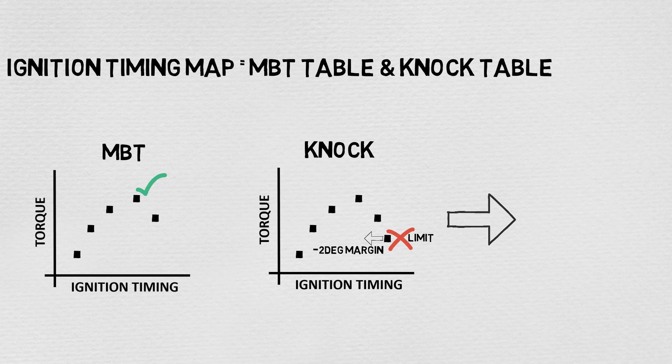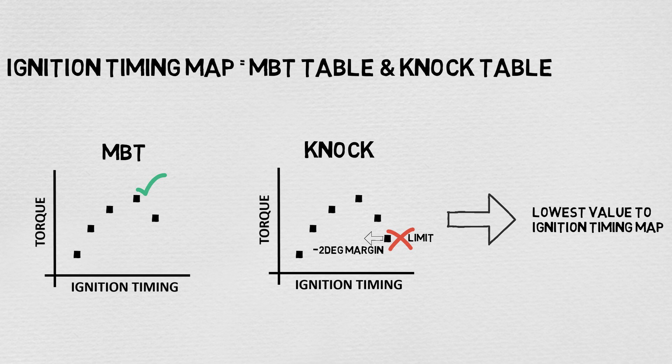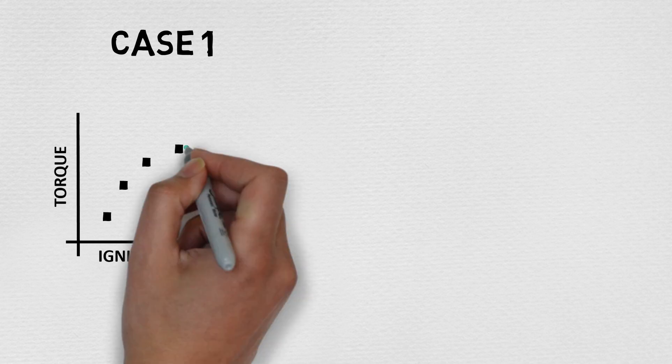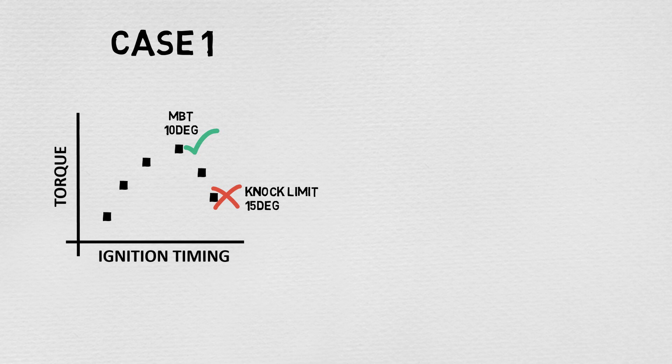Once these two tables have been established, the lowest value per speed and load is selected for the ignition timing map. Why you ask? Let's think of an example. If MBT occurs at 10 degrees before top dead center, and knock limit is at 15 degrees, there is no reason to go past 10 degrees.